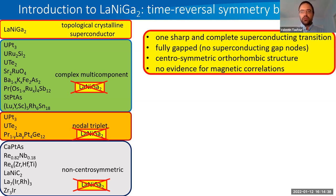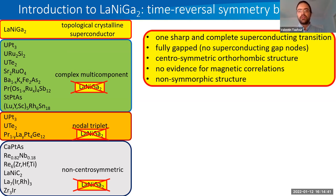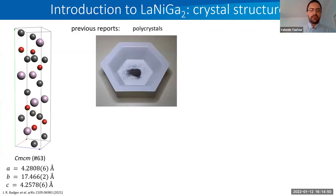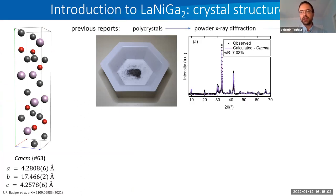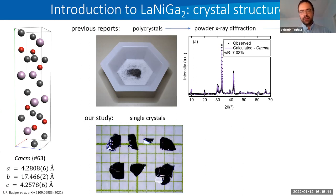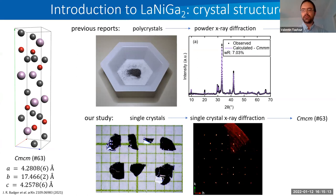This comes from a property that was unknown before: the structure is non-symmorphic. This was not known before because the previous structure determination was wrong. All previous studies were done from polycrystalline samples, and powder X-ray diffraction gave the space group Cmm. But we grew single crystals and performed single-crystal X-ray diffraction, and found that the correct space group is actually Cmcm — which is the non-symmorphic structure.